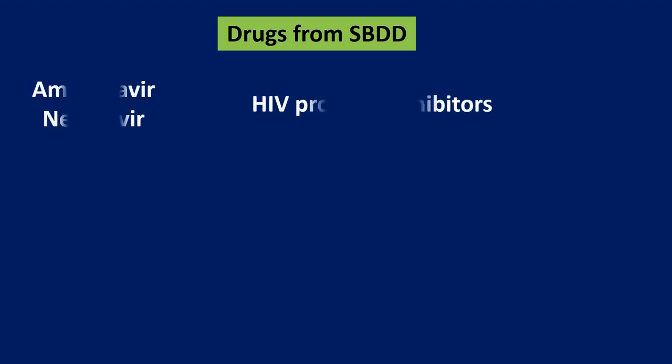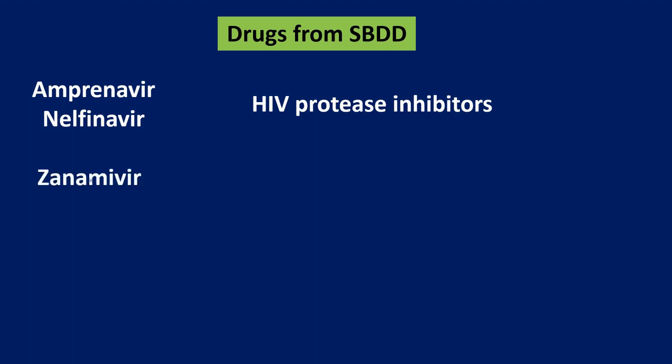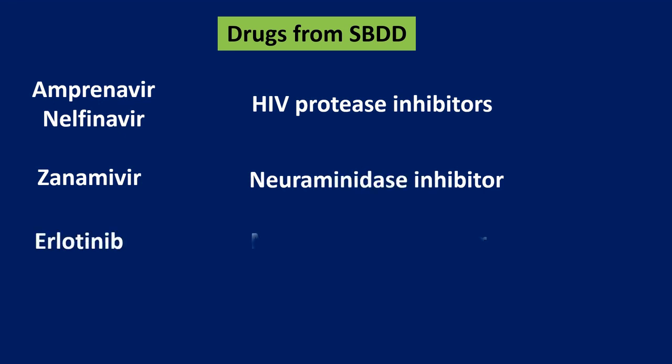Before understanding what structure-based drug design is, let us look at some examples available from it. We have the HIV protease inhibitors amprenavir and nelfinavir, then zanamivir which is a neuraminidase inhibitor, and erlotinib which is a metastatic lung cancer inhibitor.